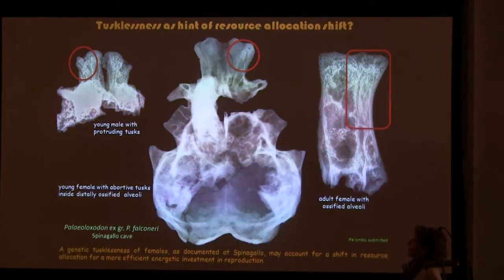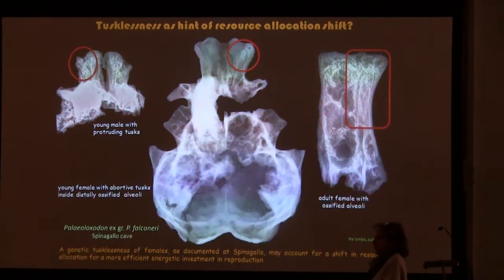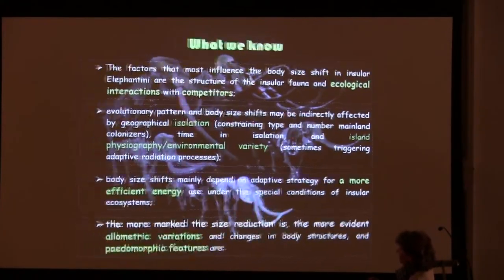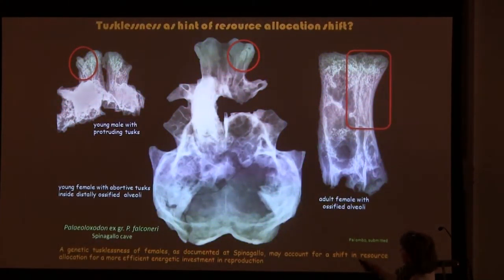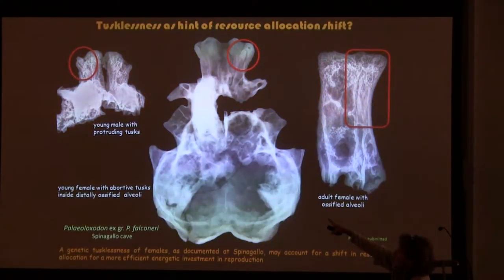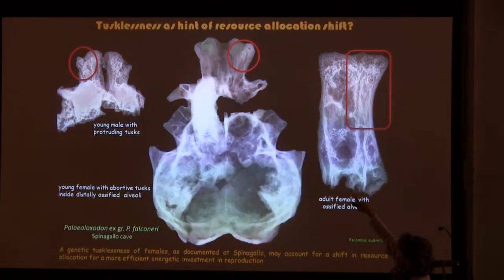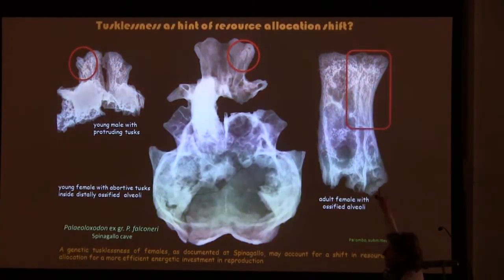But another intriguing point: analyzing all the skulls of females from Spinagallo cave, I have noted that tusklessness is absolutely present in all specimens, and it is probably a genetic process. You can see the difference: on the left, a young male with the protruding milk tusk; in the middle, a young female with the milk tusk inside, the alveolus ossified at the distal part; and in the adult female, the alveolus is completely ossified.